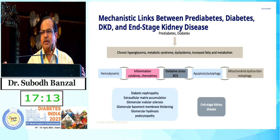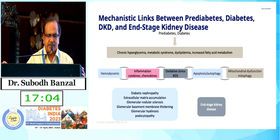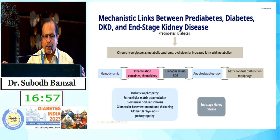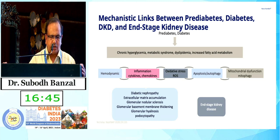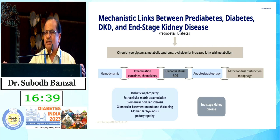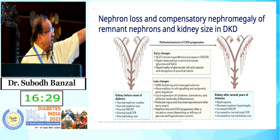There are many mechanistic links between pre-diabetes, diabetes, and end-stage renal disease. Chronic hyperglycemia, metabolic syndrome, dyslipidemia, increased fatty acid metabolism, hemodynamic inflammatory changes, cytokines, chemokines, oxidative stress, apoptosis, and mitochondrial dysfunction — along with mitophagy — lead to diabetic nephropathy with extracellular matrix accumulation, glomerular nodular sclerosis, glomerular basement membrane thickening, hyalinosis, and podocytopathy leading to end-stage renal failure.